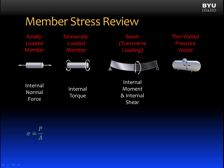An internal normal force in a member results in normal stress, and that normal stress is equal to the internal normal force P divided by the cross-sectional area A. An internal torque causes an internal shear stress, and the shear stress is calculated as the internal torque T times rho, which is the distance from the centroid of the cross-section to the point where stress is being evaluated, divided by the polar moment of inertia J.